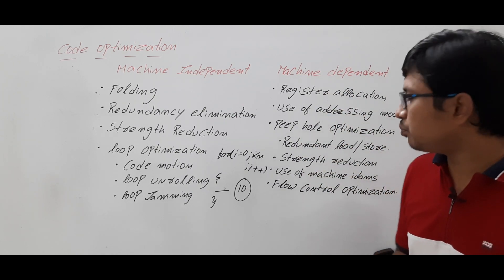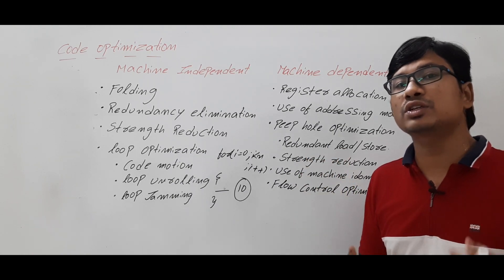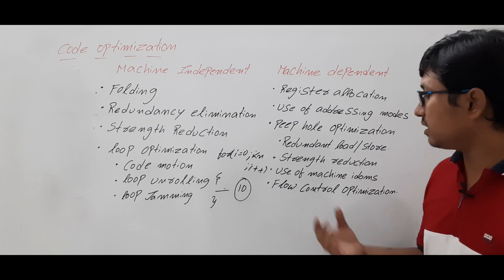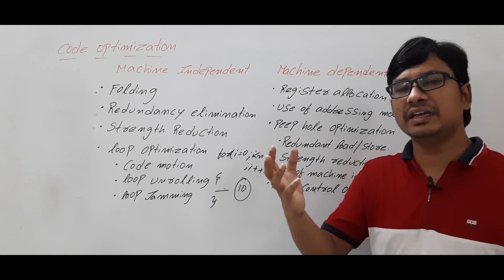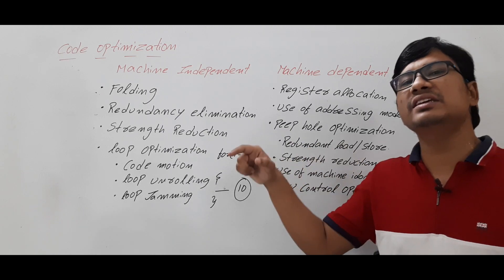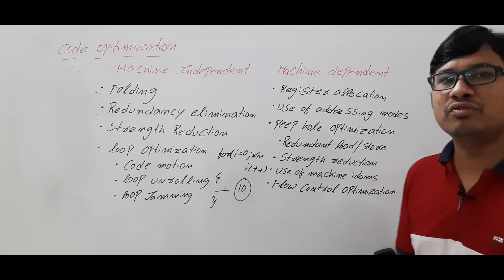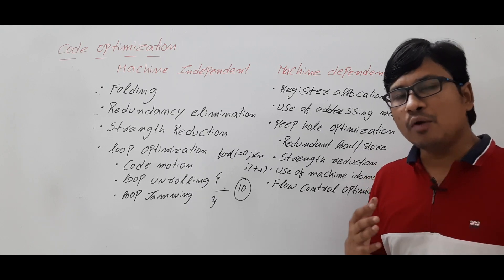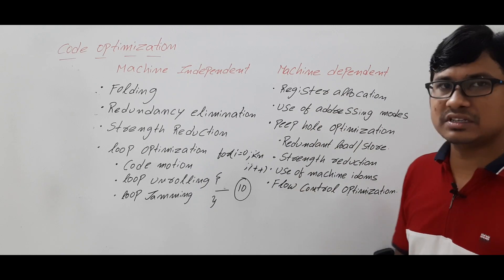Another important machine-dependent technique is peephole optimization. This includes reducing redundant load or store operations, strength reduction, and use of machine instructions — for example, instead of writing move, load, add separately, you can use an instruction like INC i to perform an increment. We also have flow control optimization such as avoiding unnecessary jumps and eliminating dead code.